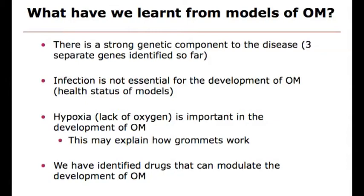We know that infection isn't essential because our mice are clean — we know their health status, which is always difficult to prove in humans, because the classic problem is you only get to patients once they're sick, so you don't know whether bacteria in their ear are there before or after the disease. The lack of oxygen in the middle ear might explain how grommets work — it's always been assumed they allow fluid to drain out and improve hearing, but actually they might be letting oxygen into an area where there isn't much, and we know the genes affected in the mice interact with that oxygen pathway, which may down-regulate the inflammation.